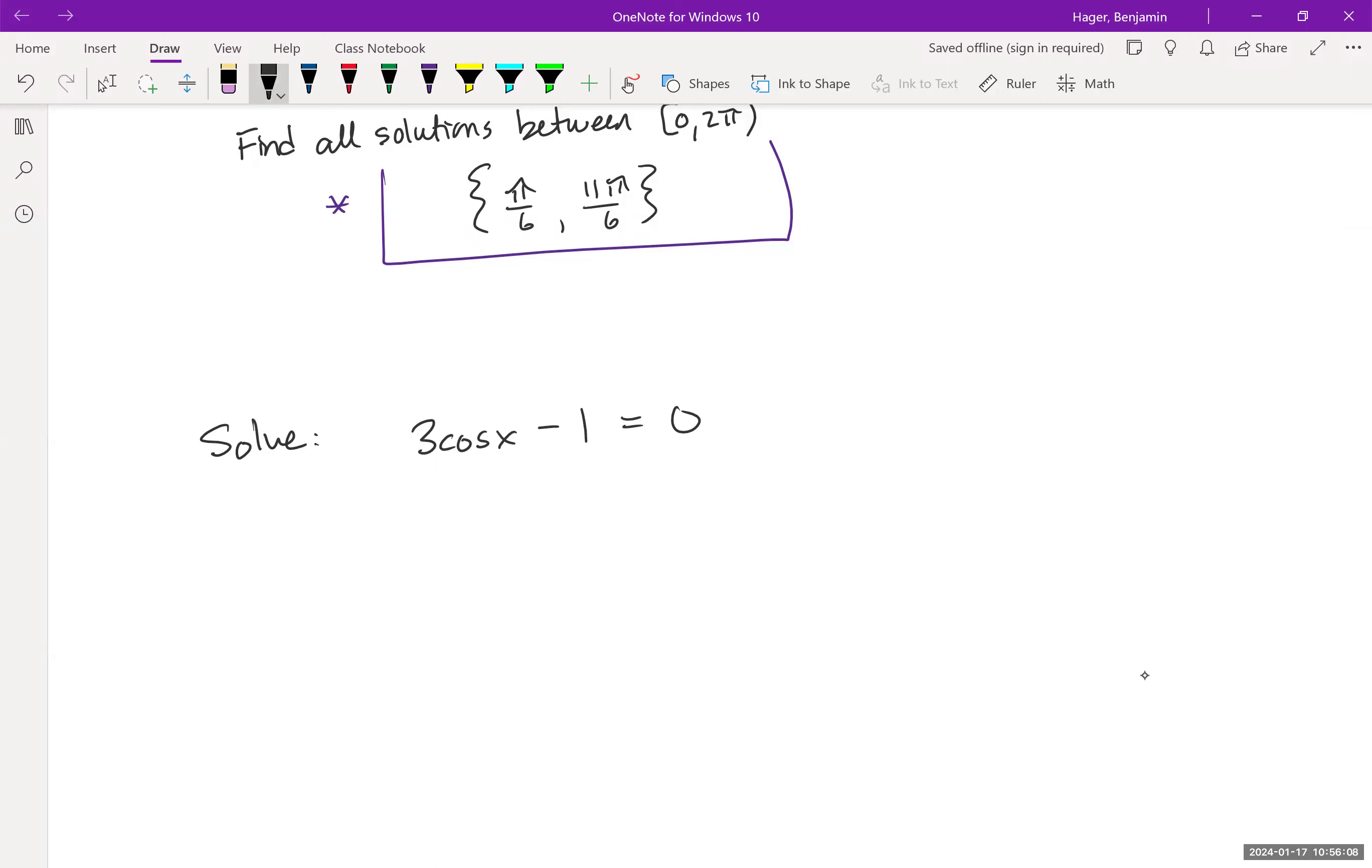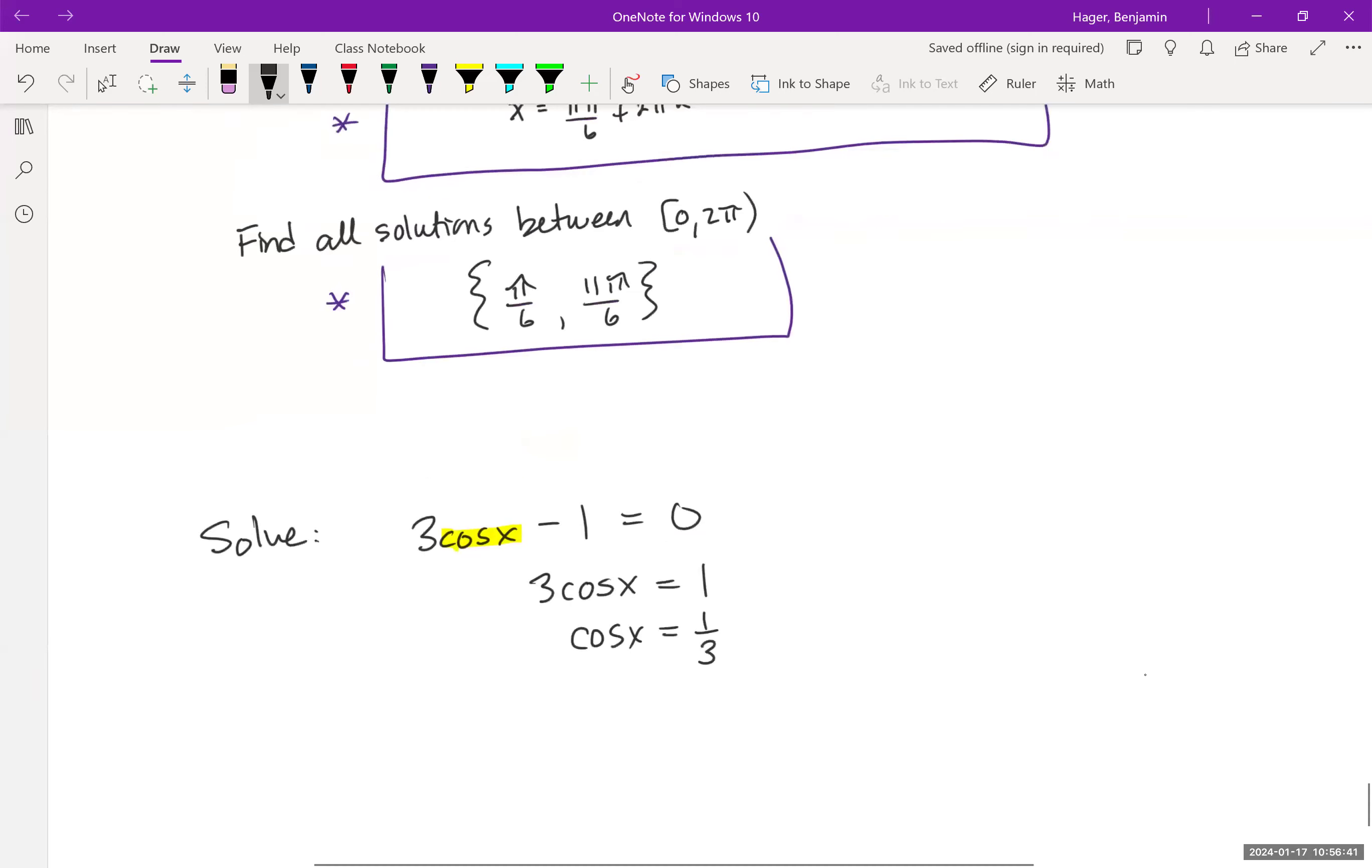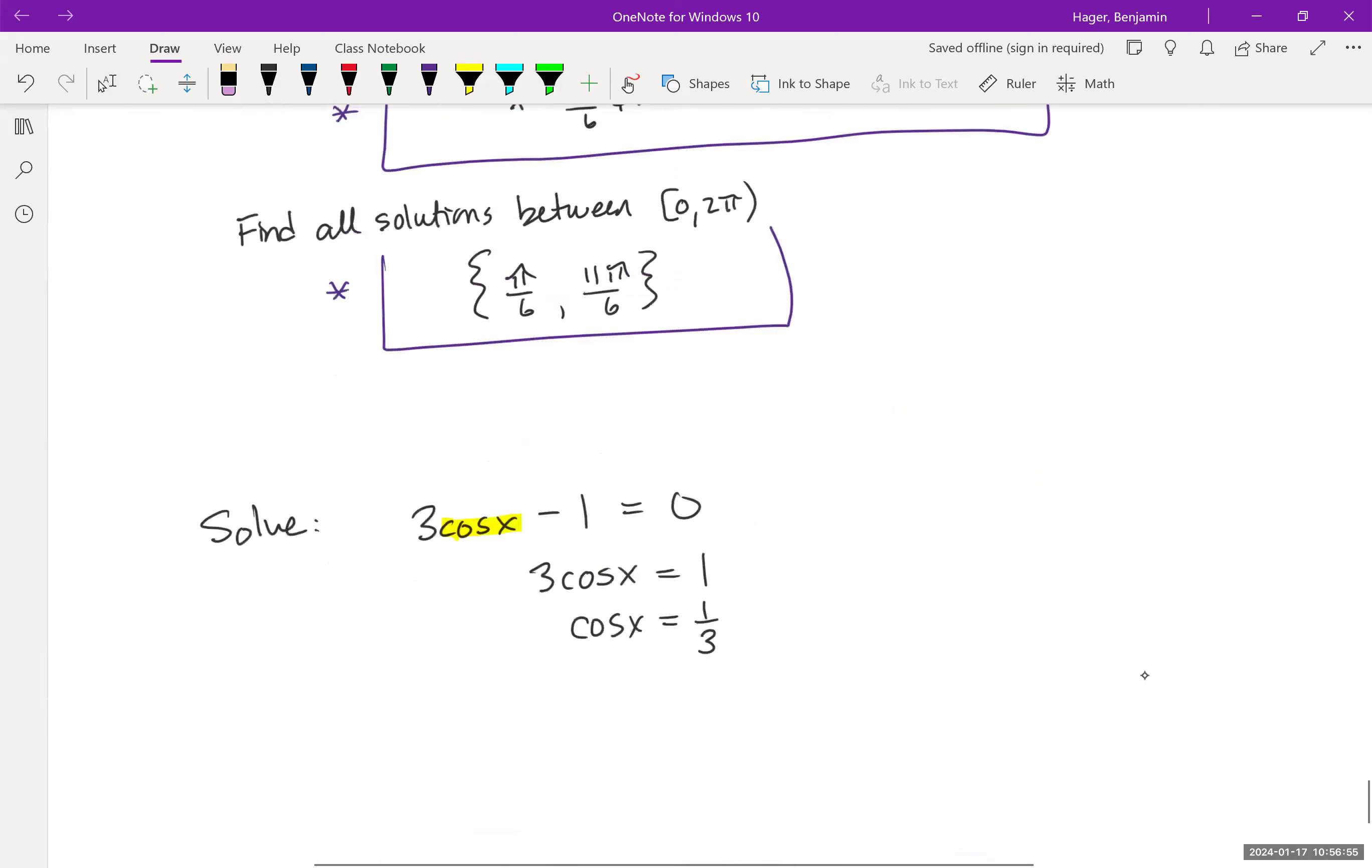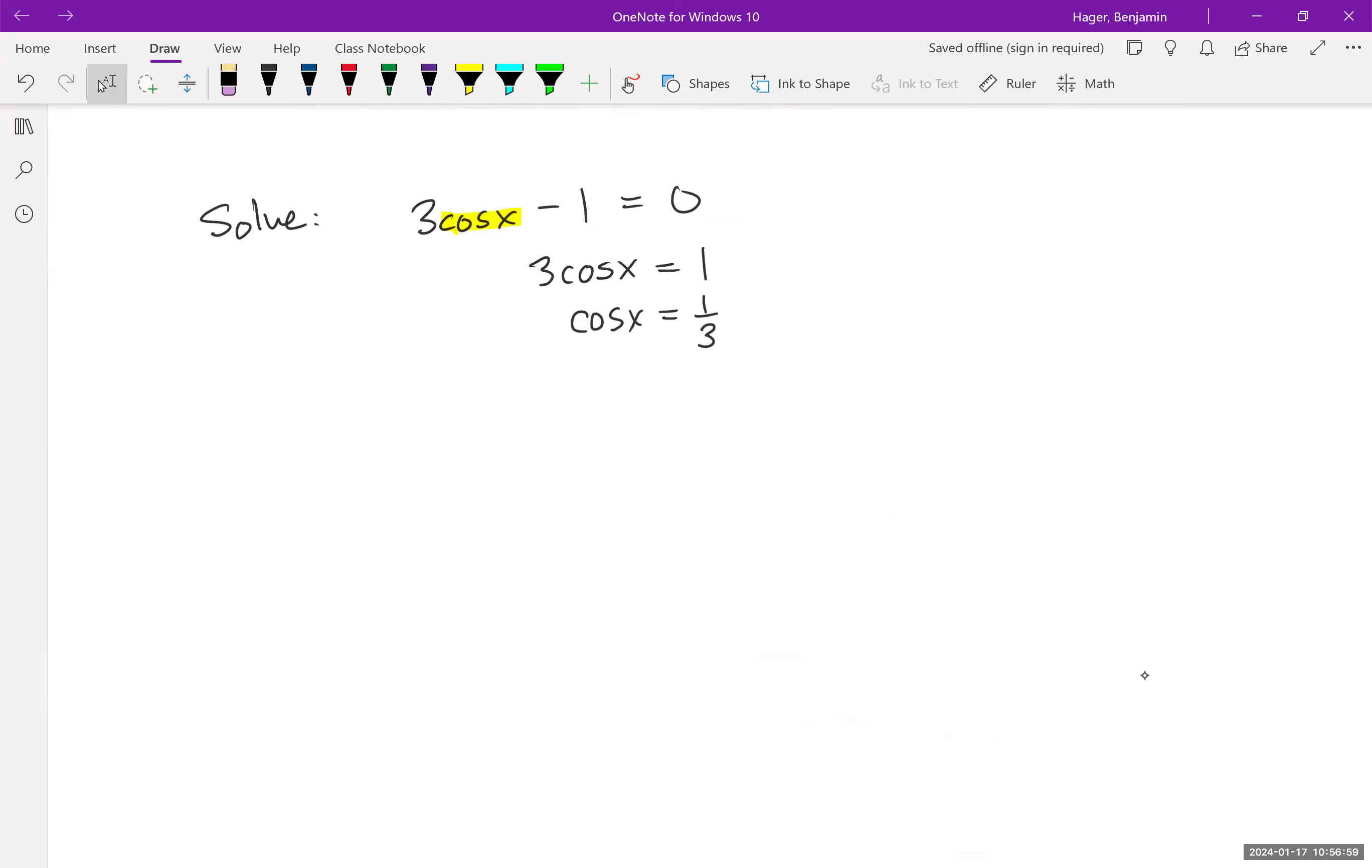If we're solving a trig equation, we've got to start by isolating the cosine function. Ultimately, we're after that angle, but we start by getting the trig function by itself. Moving the 1 over and then dividing by 3, I get cos(x) = 1/3. Now that is not familiar from our unit circle. If you look at the different cosine and sine values, none of them are 1/3. So the unit circle method is no help here. We have to use an inverse trig function.